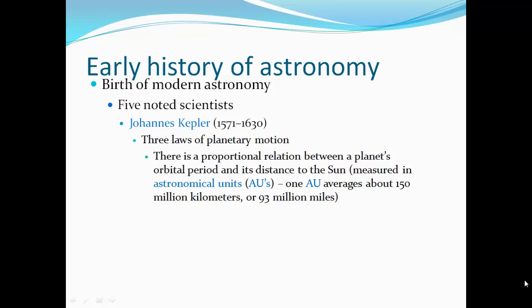Now also, the third one, there's a proportional relationship between the planet's orbital period, the time it takes to go around the orbit, and its distance from the Sun. This is measured in astronomical units, or AUs. One AU is just about 150 million kilometers, or 93 million miles. It's the distance between the Earth and the Sun.